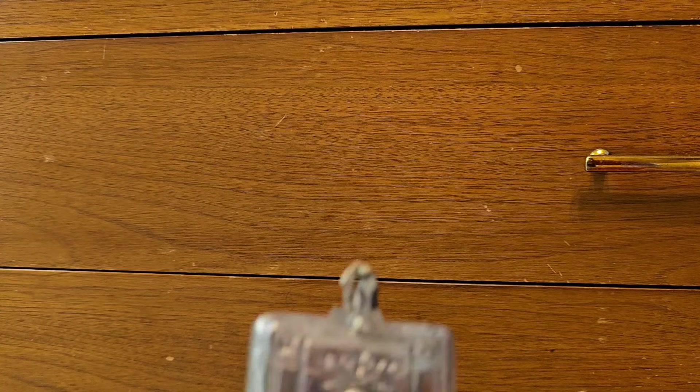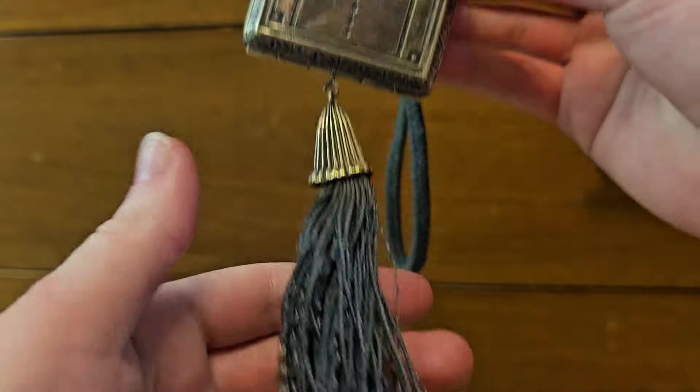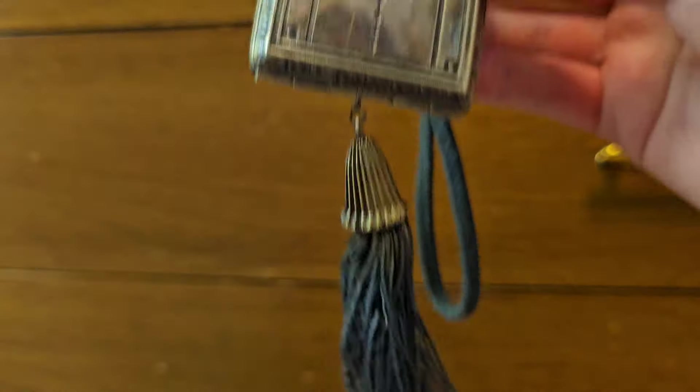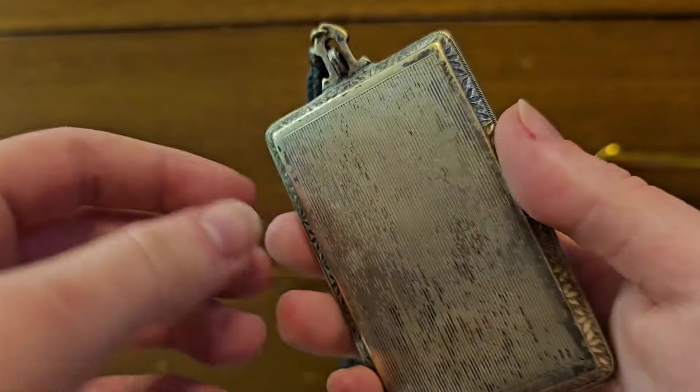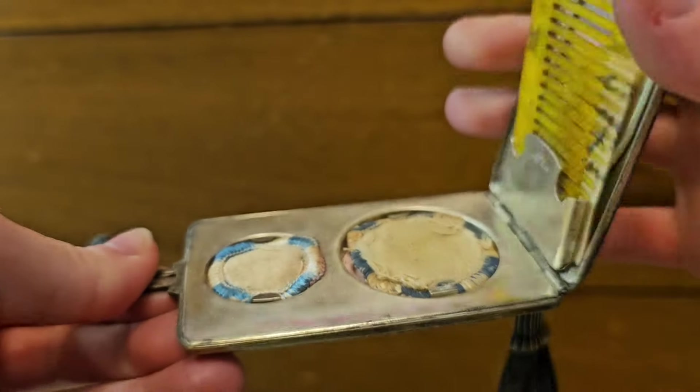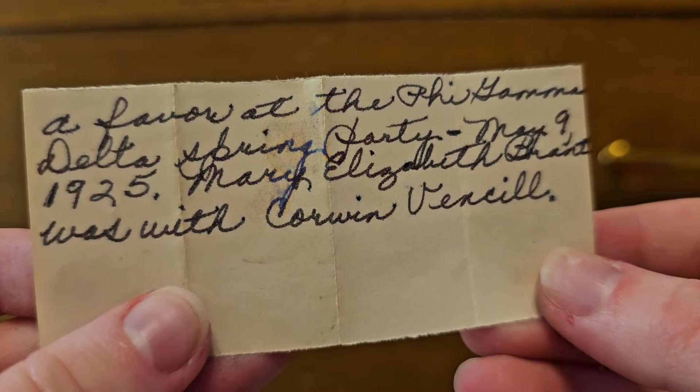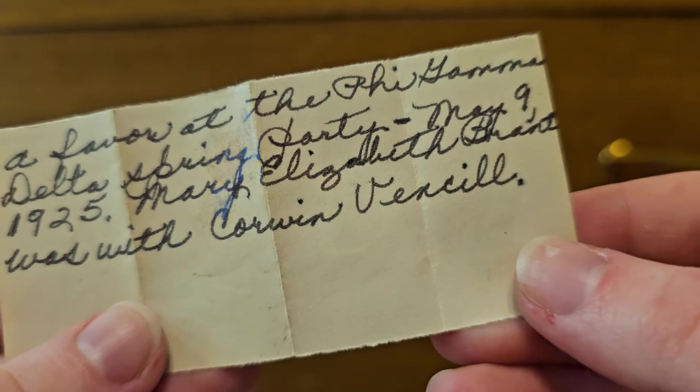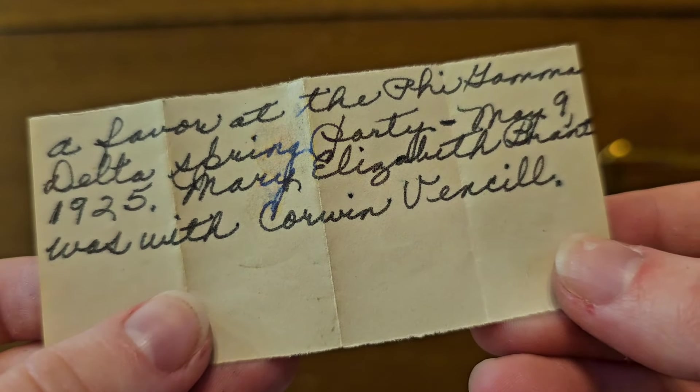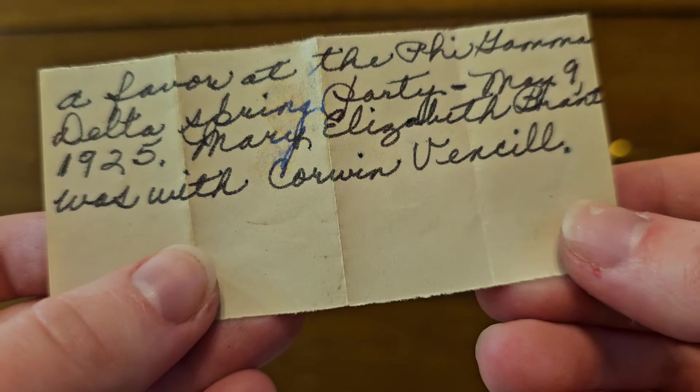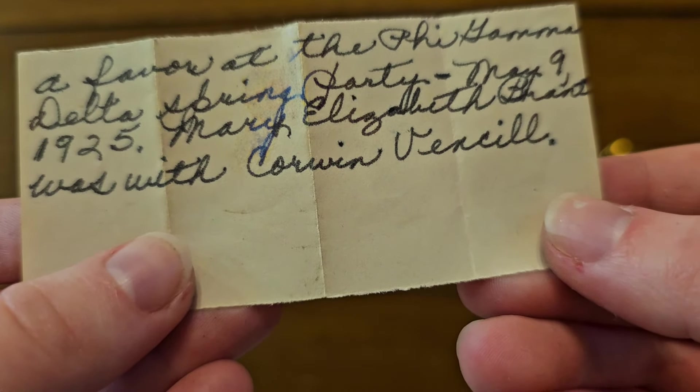Then these two. These two I bought from the same vendor, and they must have belonged to the same woman because the notes refer to the same woman. And yes, they have notes inside. Let's get to that. So rouge, powder, comb, note. I'm going to gently unwrap it and open it. Words are hard for me right now. Anyway. A favor at the Pi Gamma Delta spring party, May 9th 1925. Mary Elizabeth Brandt was with Corwin Versal, at least I think that's what that says.